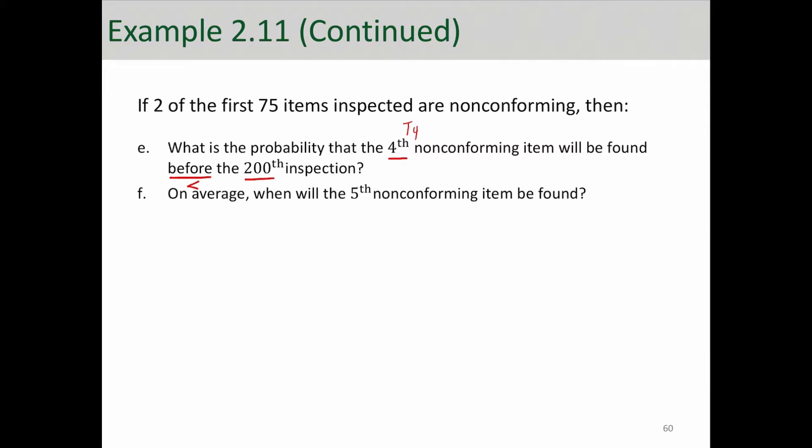So essentially, we are looking at probability of T4, number of trials until the fourth success, less than 200.